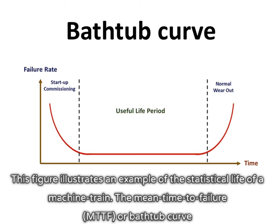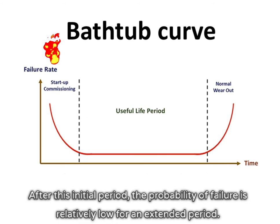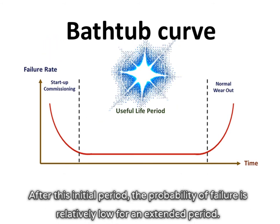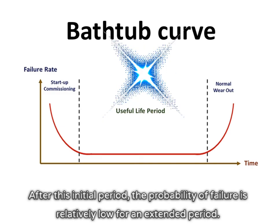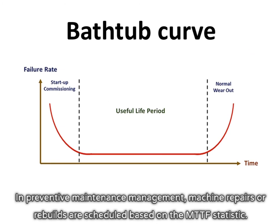This figure illustrates an example of the statistical life of a machine train. The mean time to failure MTTF, or bathtub curve, indicates that a new machine has a high probability of failure because of installation problems during the first few weeks of operation. After this initial period, the probability of failure is relatively low for an extended period. After this normal machine life period, the probability of failure increases sharply with elapsed time. In preventive maintenance management, machine repairs or rebuilds are scheduled based on the MTTF statistic.